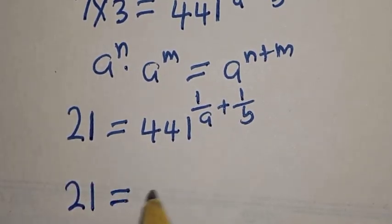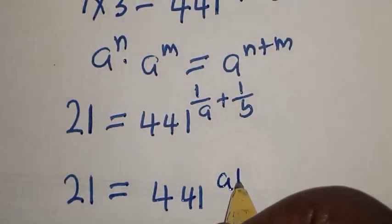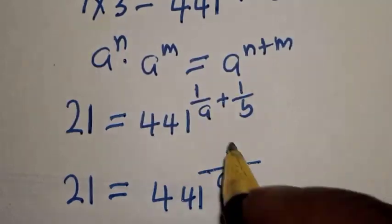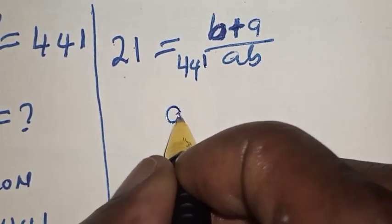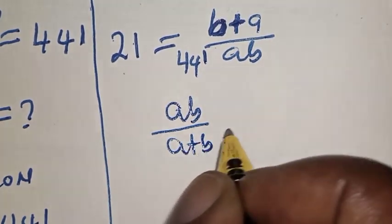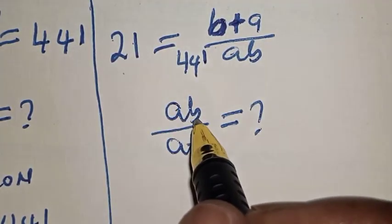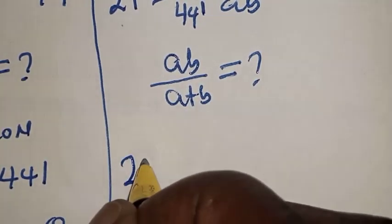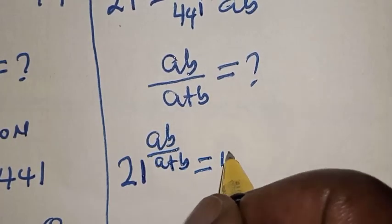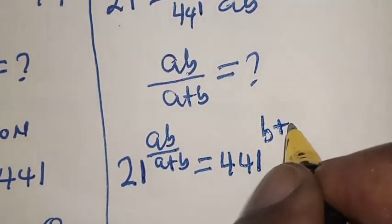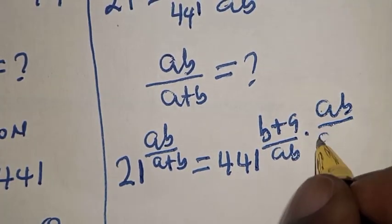So 21 is equal to 441 raised to power 1 over a plus 1 over b. Let's find the LCM from this — the LCM is ab. So a divided by ab remains b, plus b divided by ab remains a, giving the exponent as b plus a over ab. But what we are looking for is ab divided by a plus b. So let's multiply the exponent of both sides by ab divided by a plus b. That is, 21 raised to power ab divided by a plus b is equal to 441 raised to power b plus a divided by ab, multiplied by ab divided by a plus b.